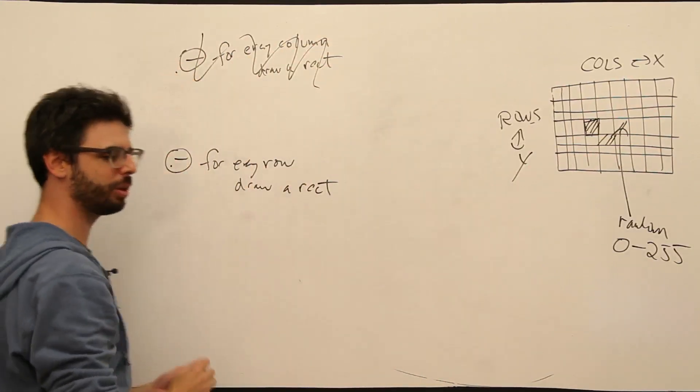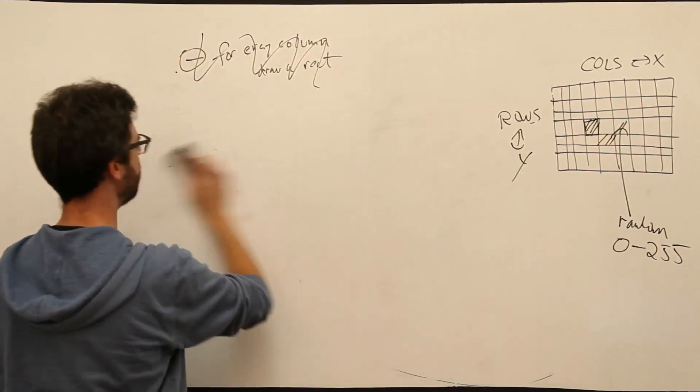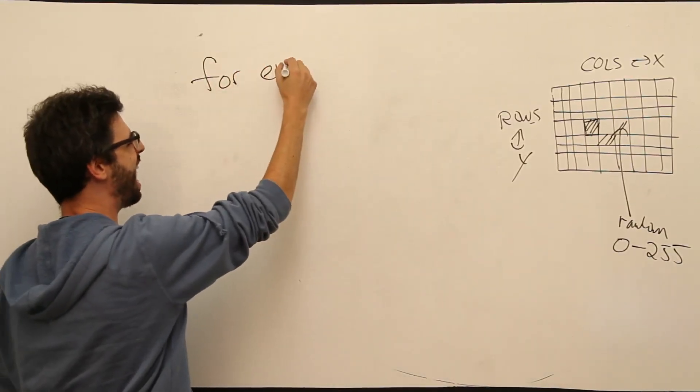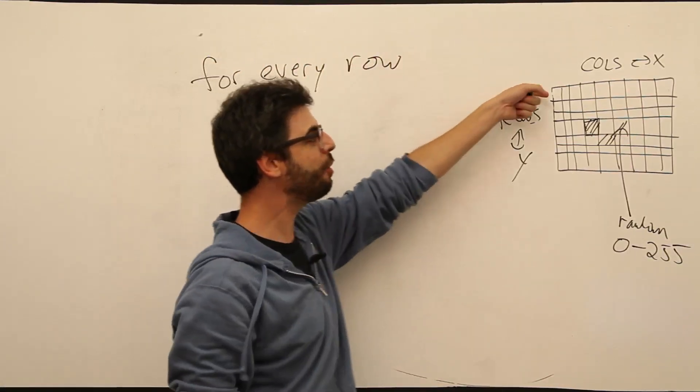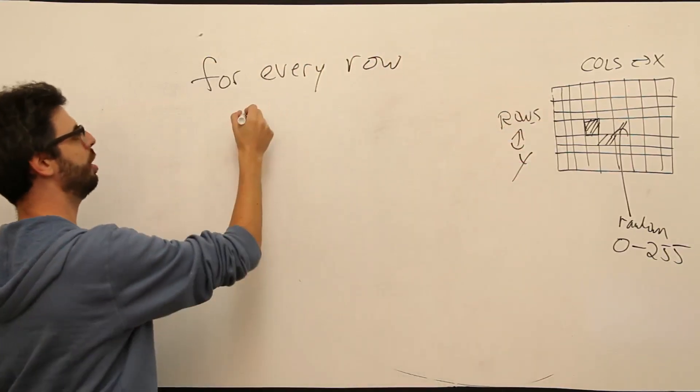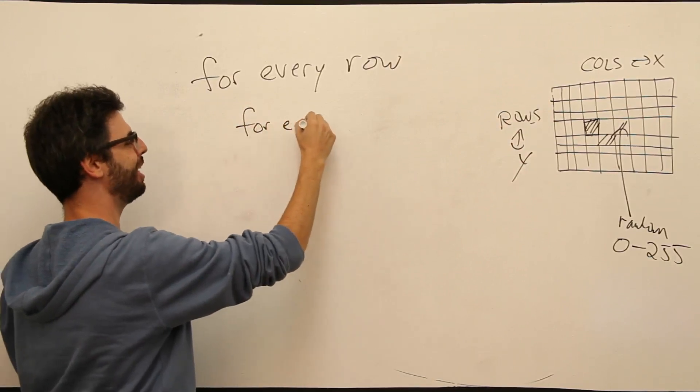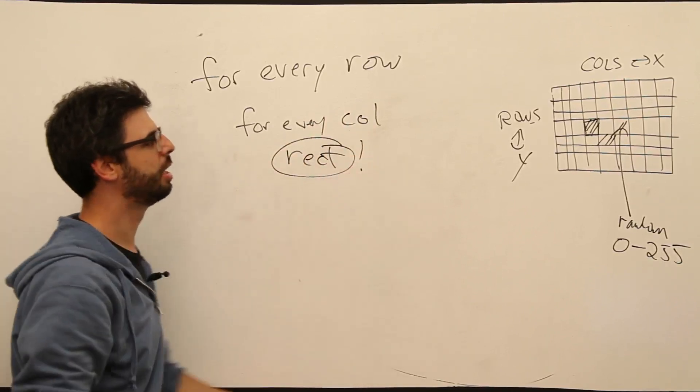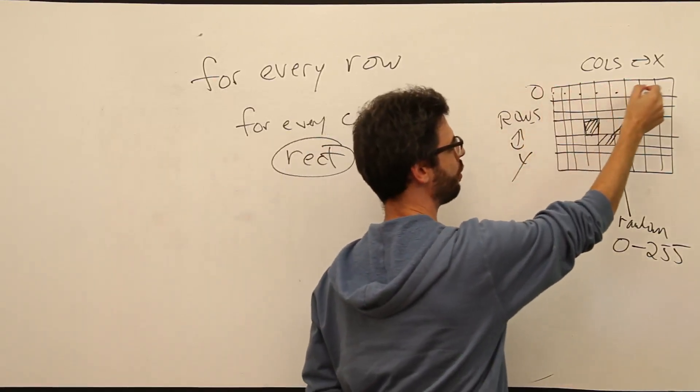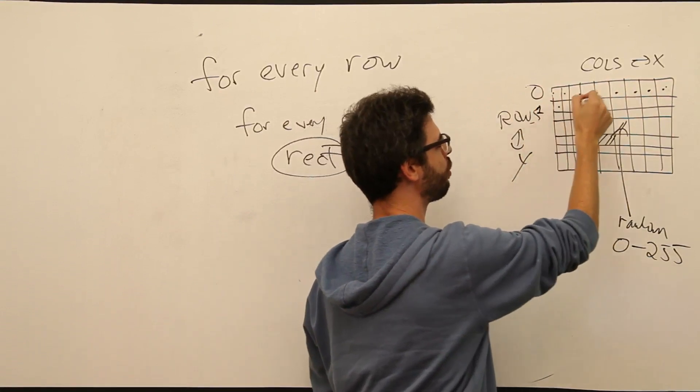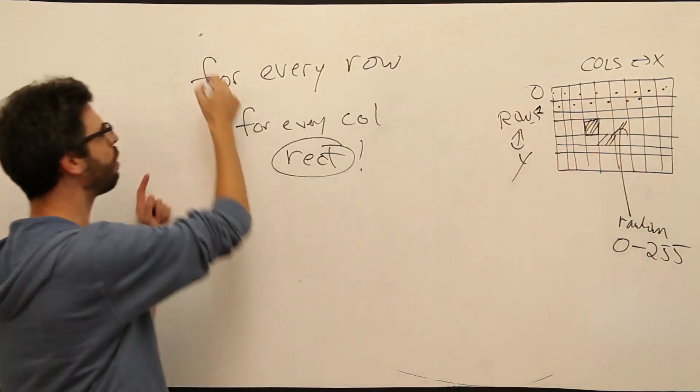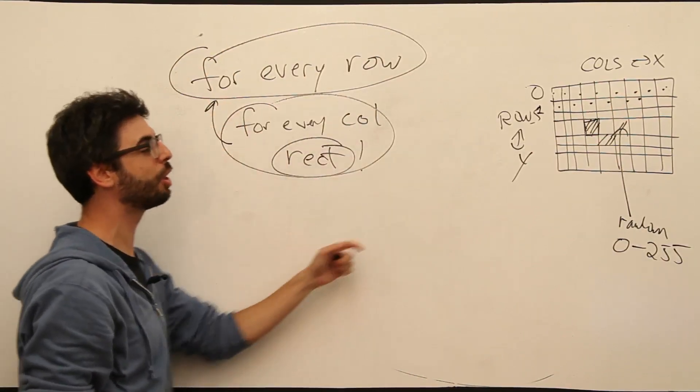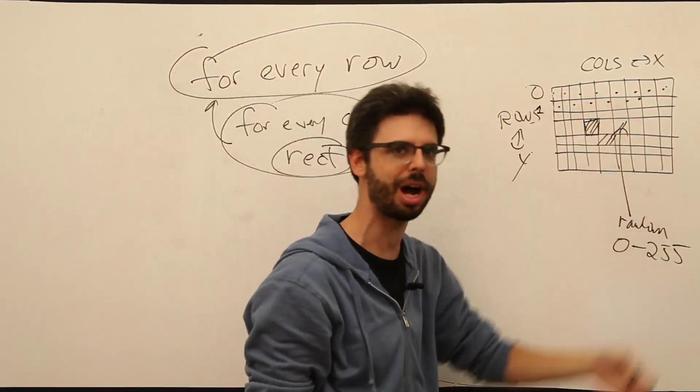We actually want to say, not two separate for statements, we want to say this: for every row, for every y value, for every column, draw a rectangle, right? We're in row zero, draw all the rectangles. We're in row one, draw all the rectangles. So this is what we're talking about, a nested loop. We're going to loop through all the rows, and for each row, we're going to loop through all the columns.